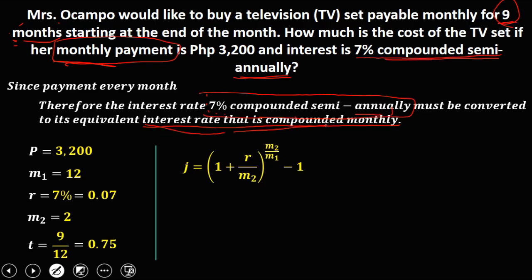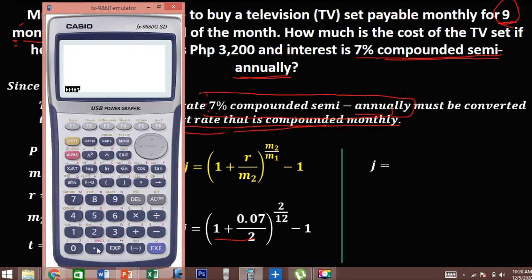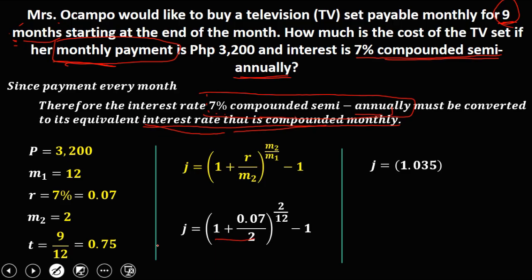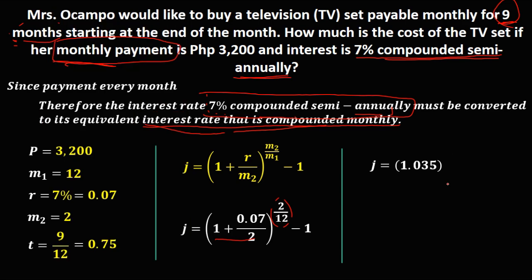This is the formula. Substituting the values: R is 0.07, M sub 2 is 2, and M sub 2 over M sub 1 is 2 over 12. Then minus 1. So we have 1 plus 0.07 divided by 2, which equals 1.035. And 1.035 raised to the power of 2 divided by 12, which is 0.1667, then minus 1.